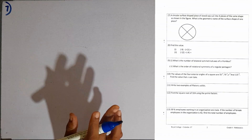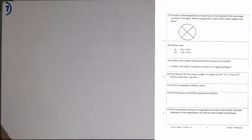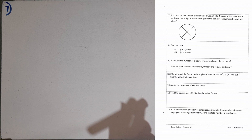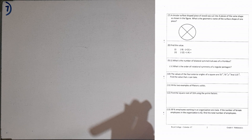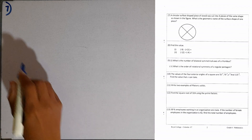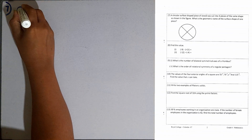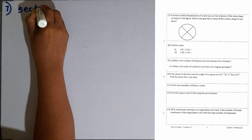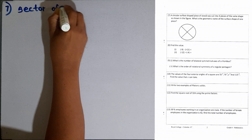Question number 7. A circular surface shaped piece of wood was cut into four pieces of the same shape as shown in the figure. What is the geometric name of the surface shape of one piece? This is a sector of the circle.